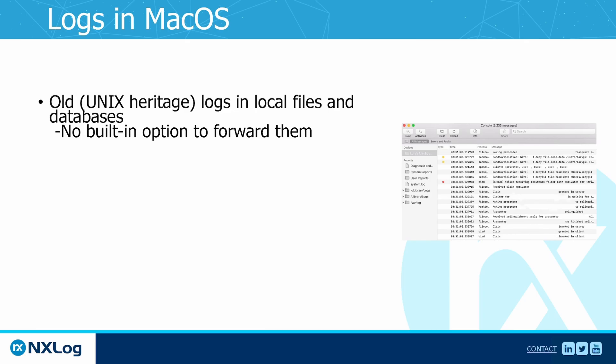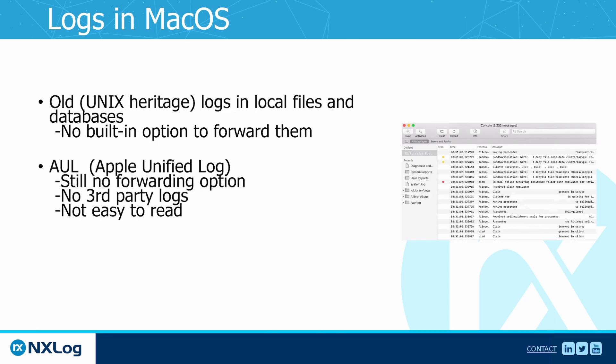For a long time macOS used traditional Unix logging methods, but in 2016 Apple wanted to standardize logging between all their platforms, so they developed AUL, which stands for Apple Unified Log. This can be considered as a counterpart of Windows Events in Windows systems. Some old log messages were not transferred to the new system, and there is no way to redirect third-party application logs to AUL. This change increased overall security but brought problems to log collection since the data is no longer stored in text files. There is no built-in solution to send logs to a remote destination, so the only solution is to use a third-party agent.